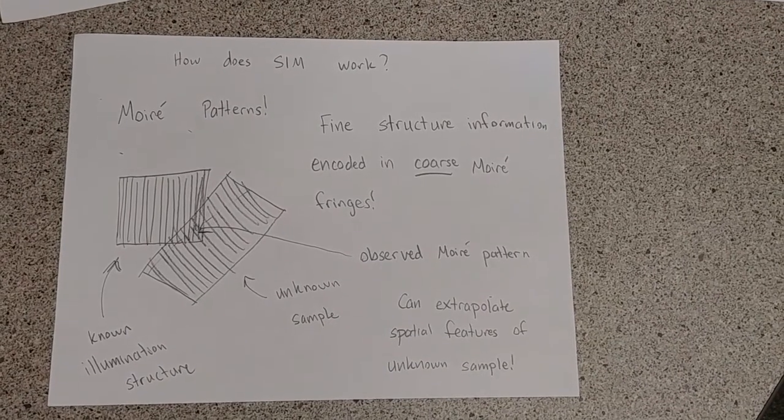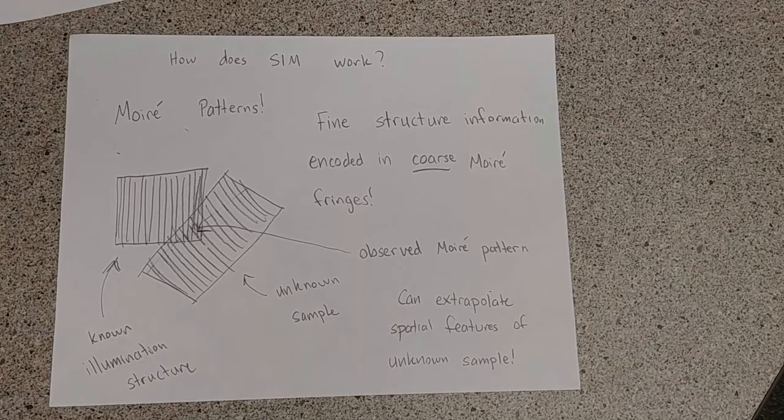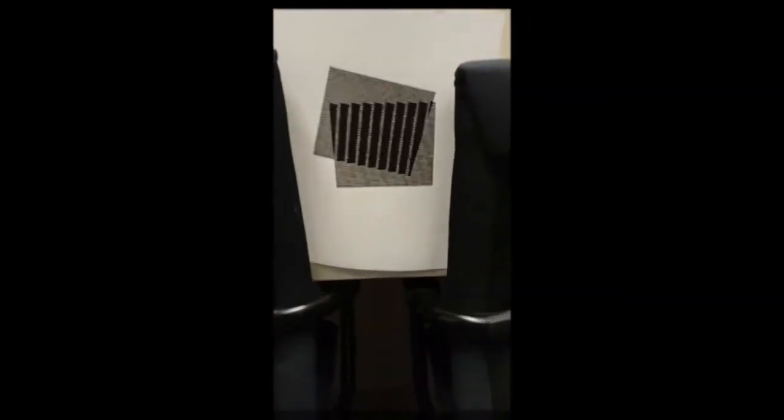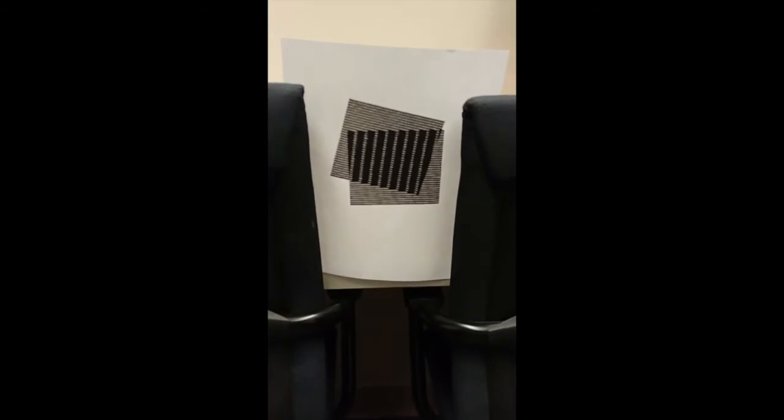SIM uses those moiré patterns to encode fine structure information in the moiré fringes. So, since the moiré pattern depends on each of those two line patterns, we can use the same concept to illuminate our target with a known illumination structure, have an unknown sample, and the two of those combined will create fringes.